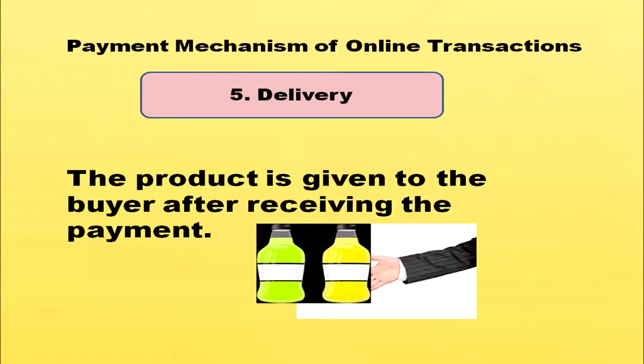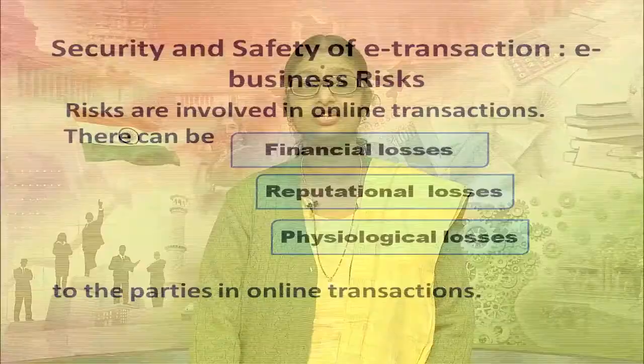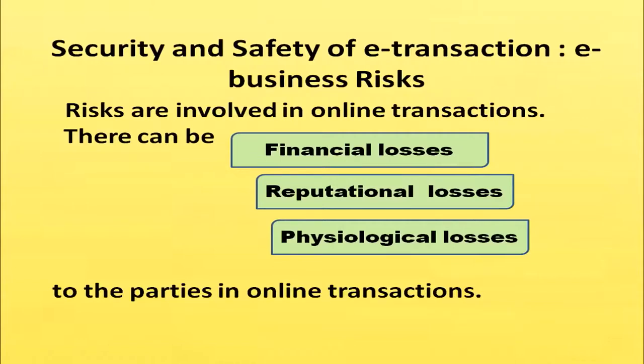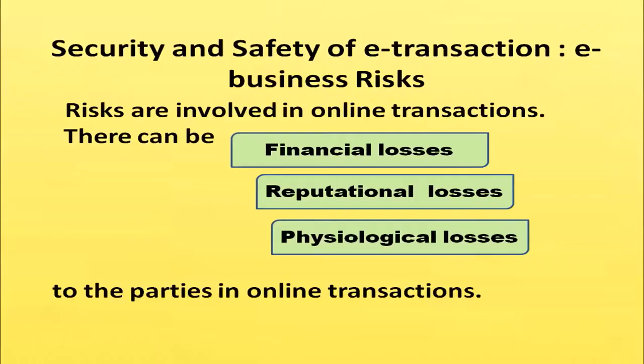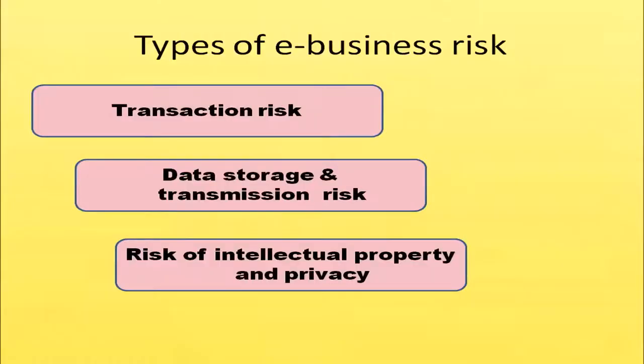After making payment, the product is delivered to the buyer. Regarding security and safety of e-transactions, risks are involved in online transactions including financial losses, reputational losses, and psychological losses. Types of e-business risk include: transaction risk, data storage and transmission risk, and risk to intellectual property and privacy.